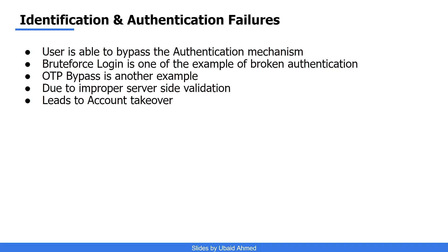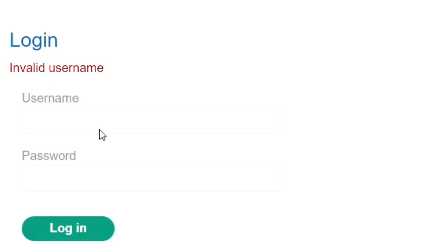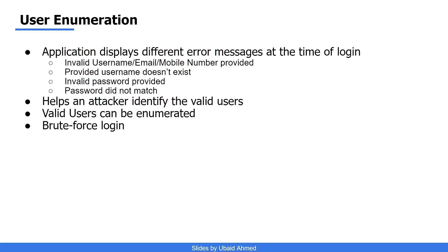The most common example of this category is user enumeration. What happens in user enumeration is that the application displays different messages for different scenarios. For example, if the user provides an invalid username, the application lets the user know the username is invalid. If they provide a valid username and an invalid password, the application says the password is invalid. This difference in behavior can help an attacker identify valid users.